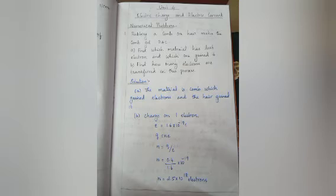Problem number one: rubbing a comb on hair makes the comb get minus 0.4 coulomb. First, find which material has lost electrons and which one gained it. Second, find how many electrons are transferred in this process.